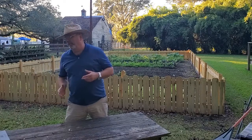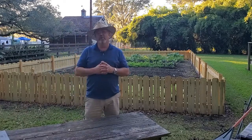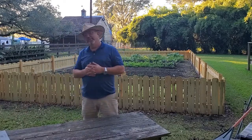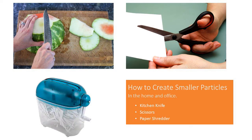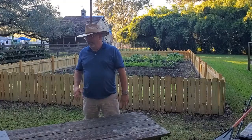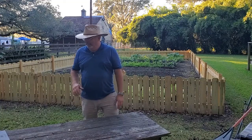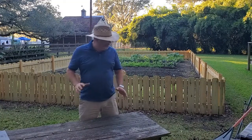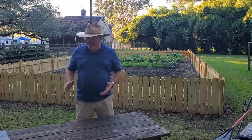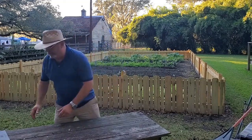If you're in the kitchen or in your house, a few things you can use would be your knife, some scissors, or a paper shredder — I like to use shredded paper in the garden, it works really well. So let's talk about some of these things; I actually have a few items from my kitchen.